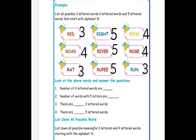Looking at the above words, we find the answers to the questions. First: the number of four-lettered words — ROAD, RING, and ROSE — there are three four-lettered words. Second: the number of five-lettered words — RIDE, RIVER, and RUPEE — there are three five-lettered words. Third: the number of three-lettered words — RED, RAT, and RUN — there are three. Fourth: five-lettered words — WRITE, RIVER, and RUPEE — there are three five-lettered words.